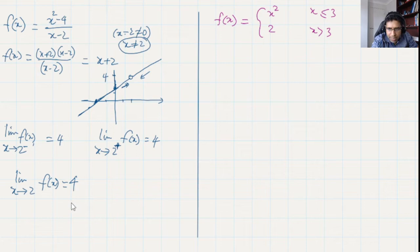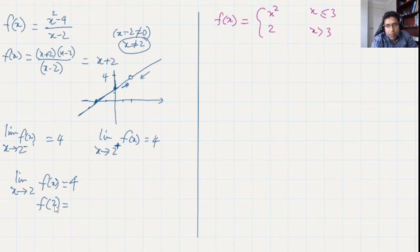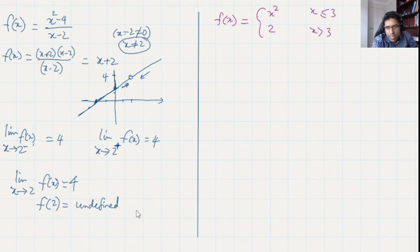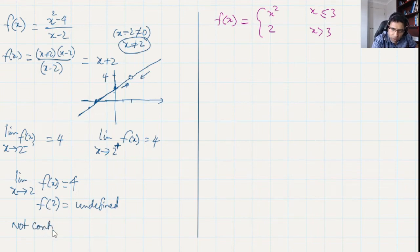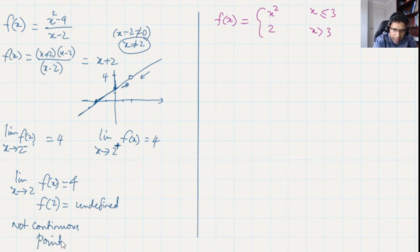However, to check continuity, the limit must equal the function value. But f(2) is undefined — x cannot be 2 — so f(2) does not exist. Since the limit is not equal to f(2), the function is not continuous. This kind of discontinuity is called removable discontinuity, or point discontinuity.